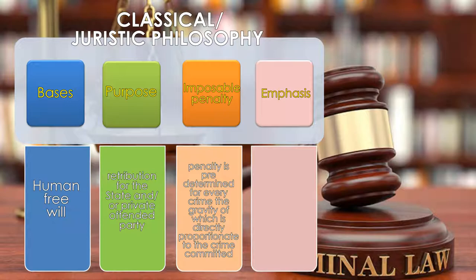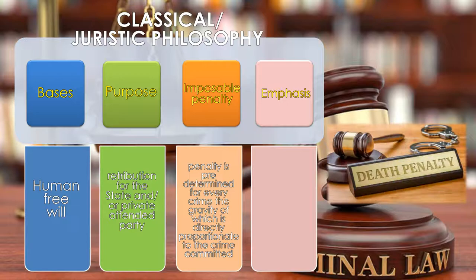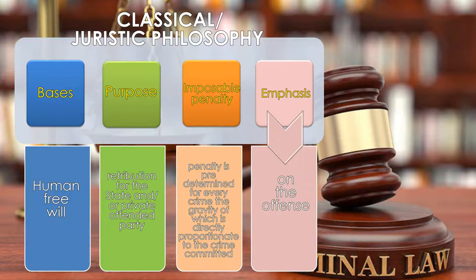Determination of penalty is done mechanically since the penalty is always in direct proportion to the crime or felony committed by the offender. So if the offender killed a person, then this should always be his penalty. Penalty is commensurate to the degree of injury inflicted on the victim. Capital felony or death penalty is a product of classical philosophy. In classical philosophy, the emphasis of the law is on the offense — on the crime and not on the criminal. It does not give any consideration to the human aspect of the commission of the crime. For as long as the crime has been committed, the offender has to be punished.